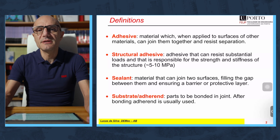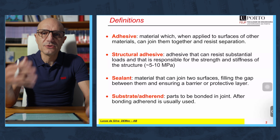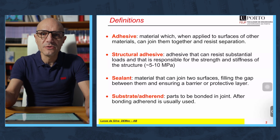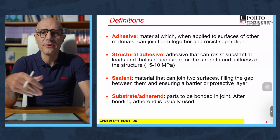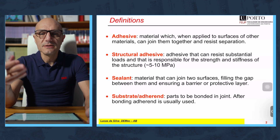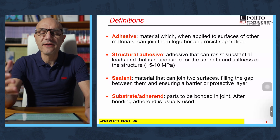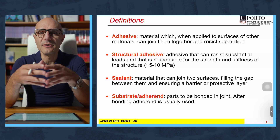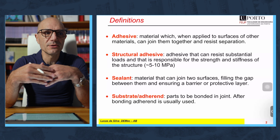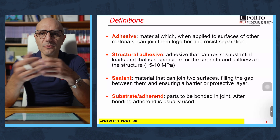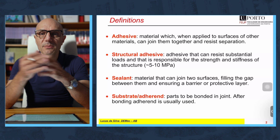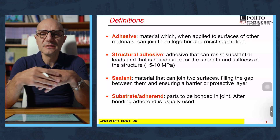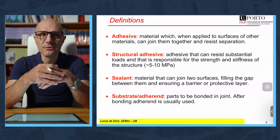Then we have the structural adhesives. Structural adhesives are used to make structures that carry quite a lot of load — for example, in structures of cars, airplanes, or trains. To be considered a structural adhesive, the adhesive should have a strength of at least 5 MPa. This seems low if you think that structural adhesives might join aluminum alloys used in the aeronautical industry, which can go up to 400 MPa. But if properly used, an adhesive can give you a high joint strength — I will explain this later.